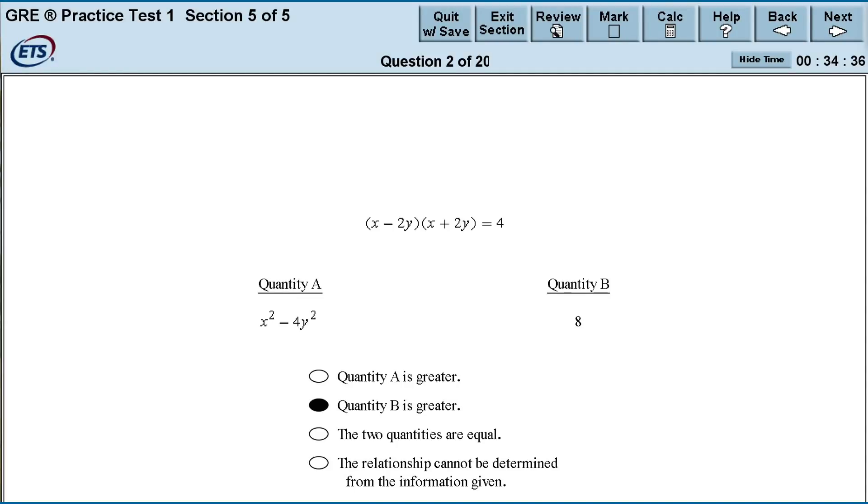For instance, in this question, quantity B is just 8. Not much we can do with that. But quantity A should be recognizable to us as a difference of squares. It takes the form a squared minus b squared, where a is x and b is 2y. We can rewrite any difference of squares as a minus b times a plus b. This means that we can rewrite quantity A as x minus 2 times x plus 2. Looking at our question stem, we see exactly that! And it equals 4. So quantity A is 4, which is clearly less than quantity B.